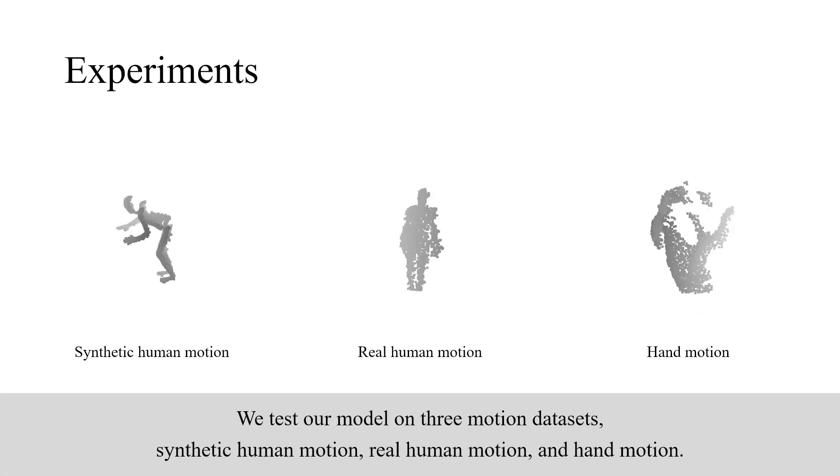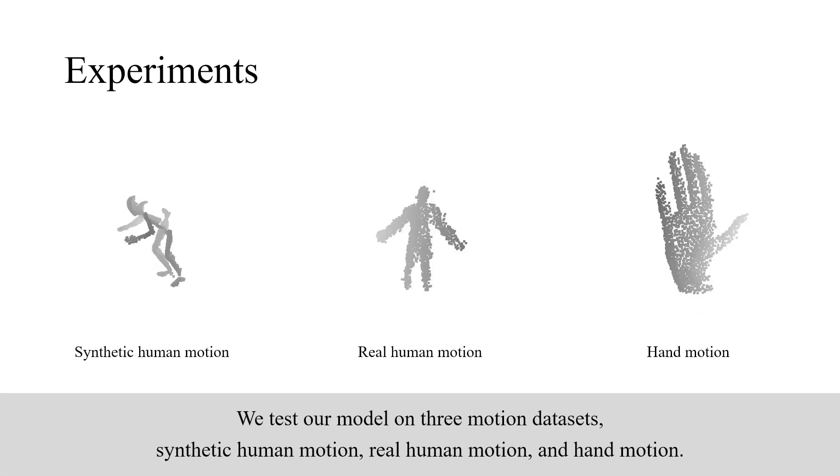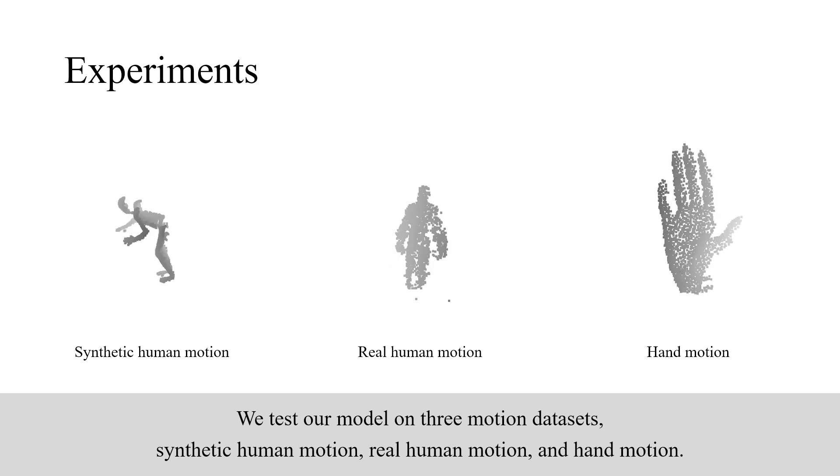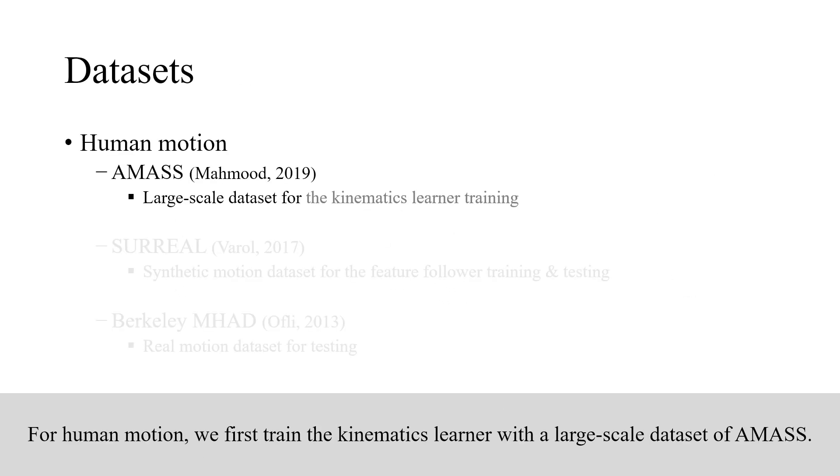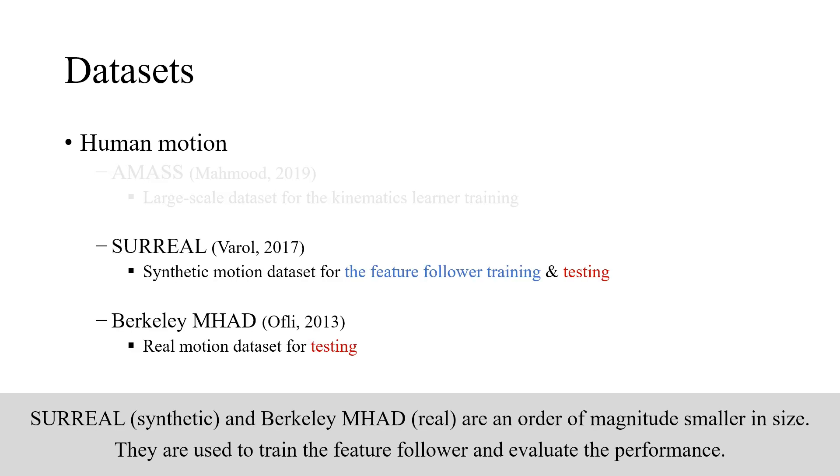We test our model on three motion datasets: synthetic human motion, real human motion, and hand motion. For human motion, we first train the Kinematics Learner with a large-scale dataset of AMASS. 3DPW and Berkeley MHAD are an order of magnitude smaller in size. They are used to train the feature follower and evaluate the performance.